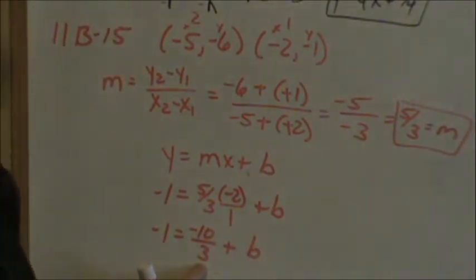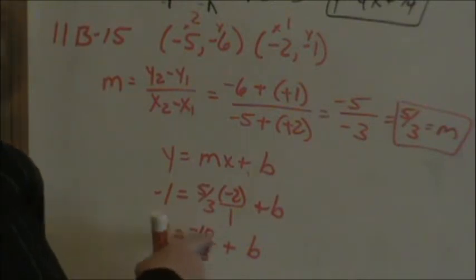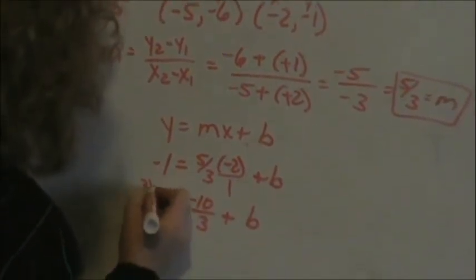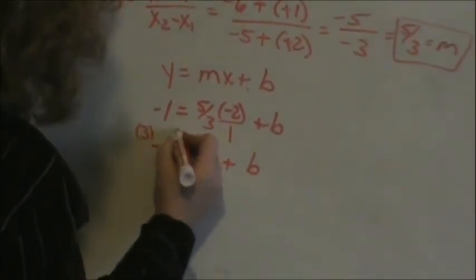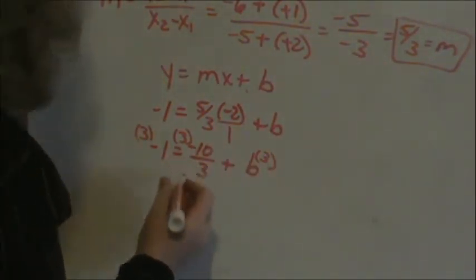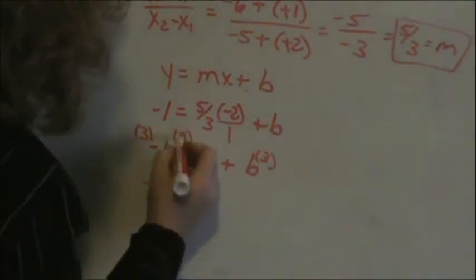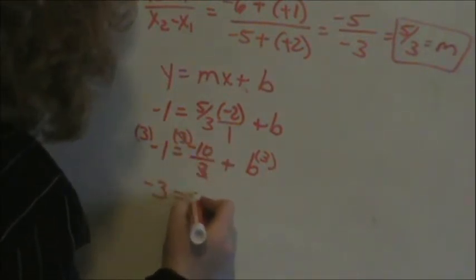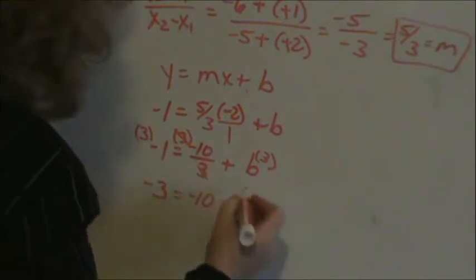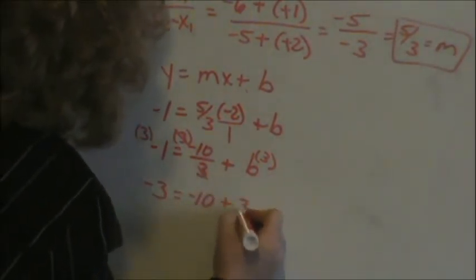Do I want fractions? No. So I need to multiply everything by what will eliminate this denominator. 3 will make this denominator cancel. So I multiply everything by 3. I use parentheses because parentheses shows multiplication. 3 times negative 1, negative 3. These 3's cancel. So my negative 10 stays there. So it's like negative 10 times 1 plus 3b.